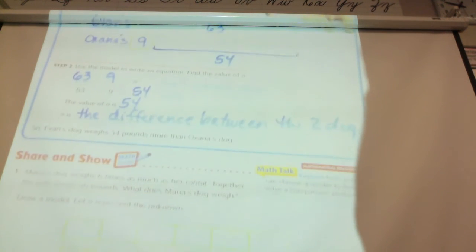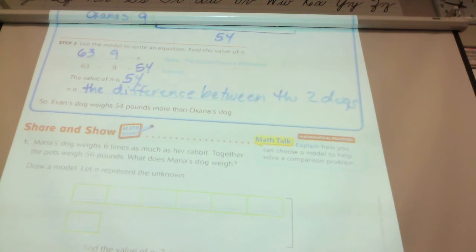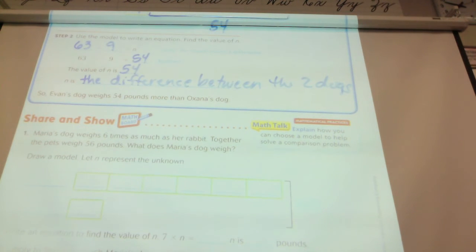Okay, let's look at the bottom. Maria's dog weighs six times as much as her rabbit. Together, the pets weigh 56 pounds. What does Maria's dog weigh? We're comparing what two animals? A dog and a rabbit. And I could probably guess that the dog weighs more, but I want to double check. Looking at my problem, is it the dog that weighs more or the rabbit that weighs more?